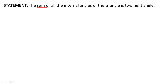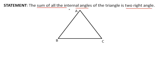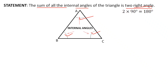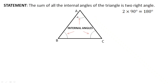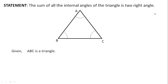Let's begin with the theorem. The statement says that the sum of all the internal angles of a triangle is equal to two right angles. Internal angles are the angles made inside the triangle — these three are all the internal angles. Two right angles means 2 times 90, which equals 180 degrees. So whenever you add these three internal angles, the result should be equal to 180 degrees. This is what we need to prove.